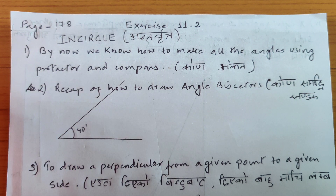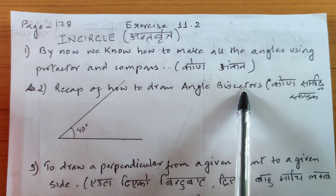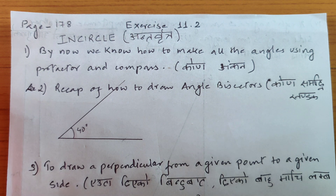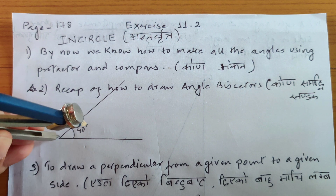By now I expect you all to know how to draw angles using a protractor and compass. We'll be needing angle bisectors for the incircle, so I'll recap how to draw angle bisectors. Remember drawing 60 degrees and then bisecting to get 30 degrees — we draw angle bisectors to get 30 degrees.